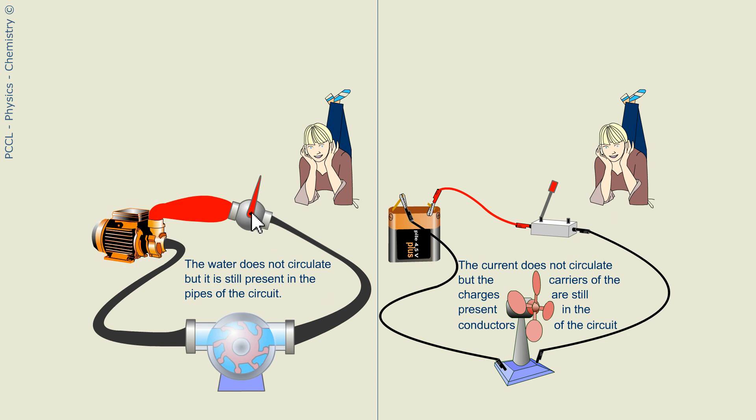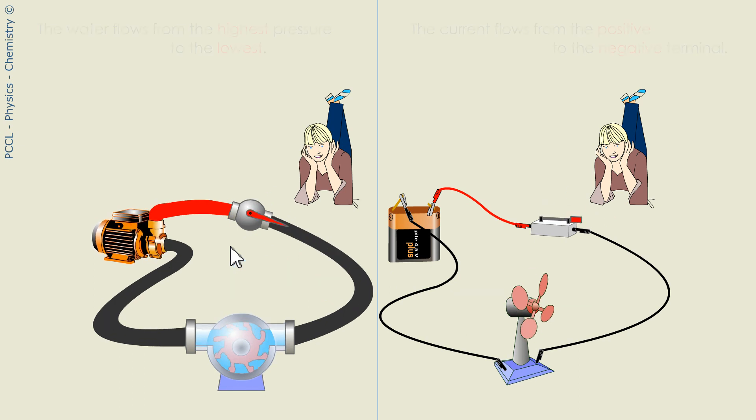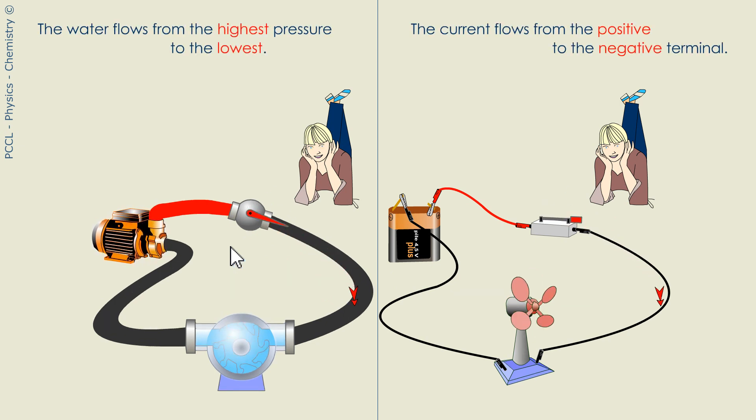And here the valve prevents water from circulating. If electricity is allowed to pass, current flows from the positive terminal to the negative. If water is allowed to pass, current flows from high pressure to low pressure. Like the wind, they go down, they descend the pressures.